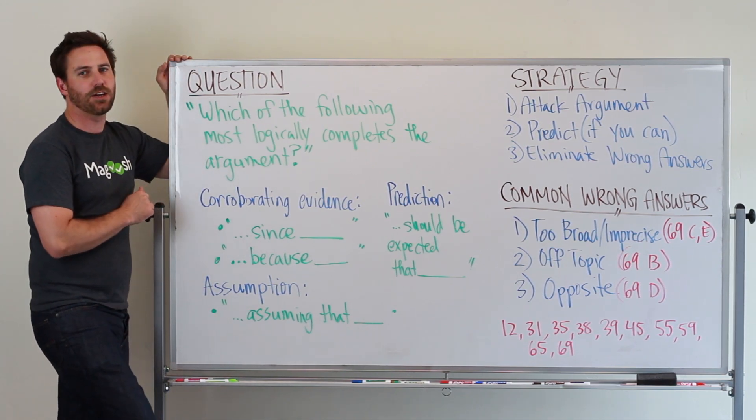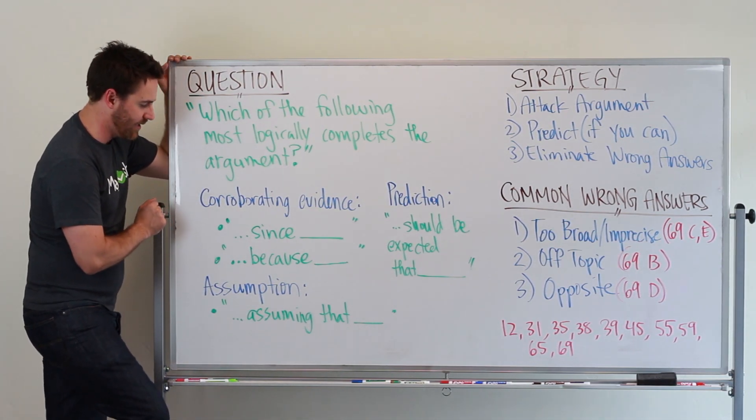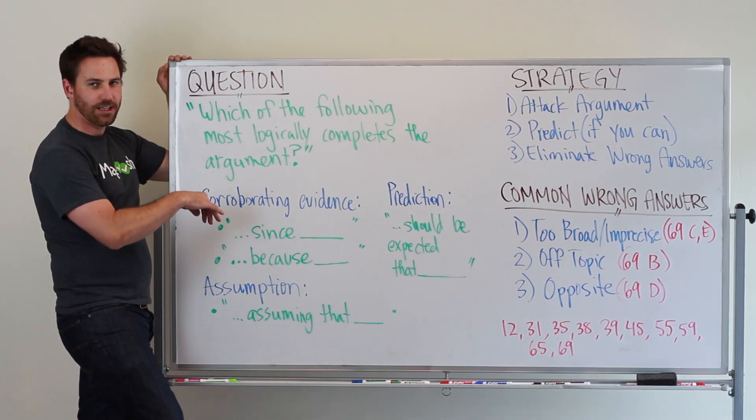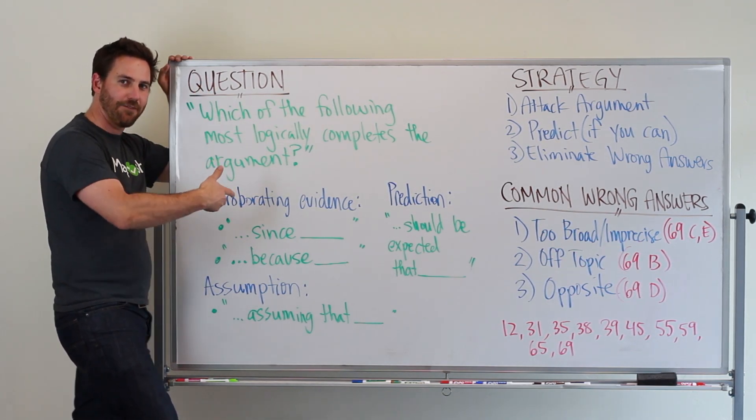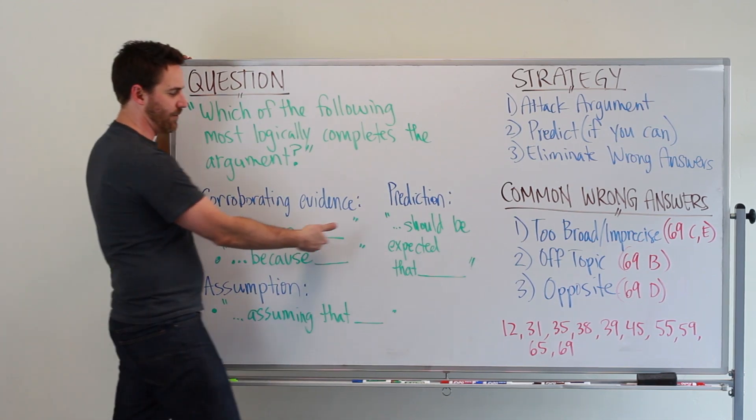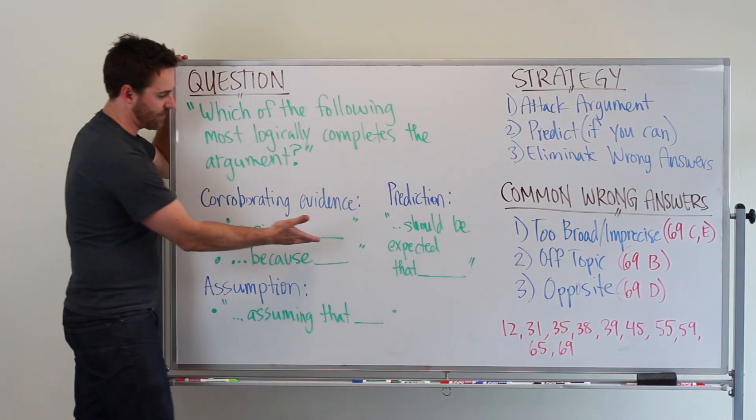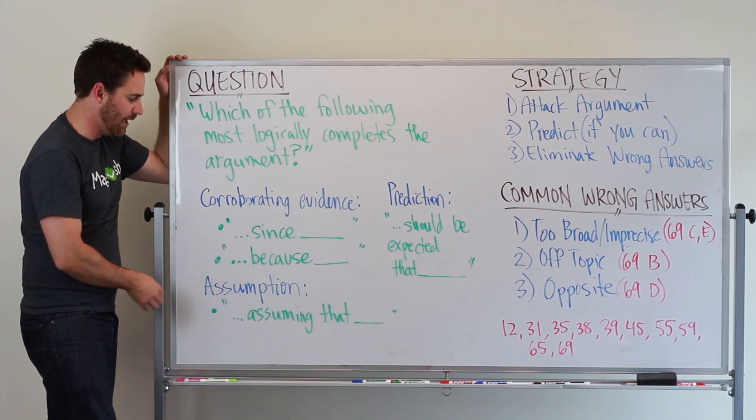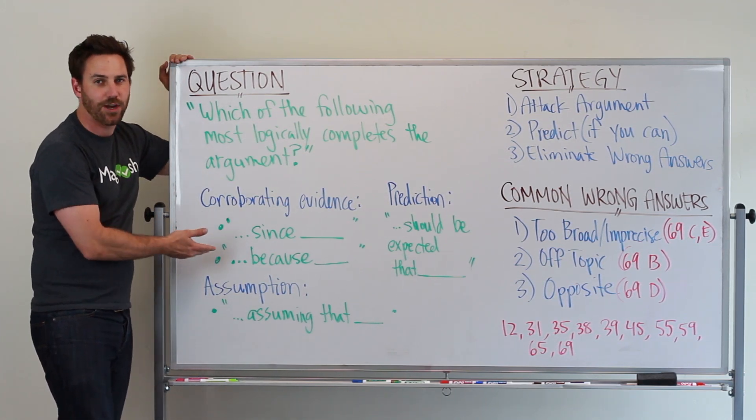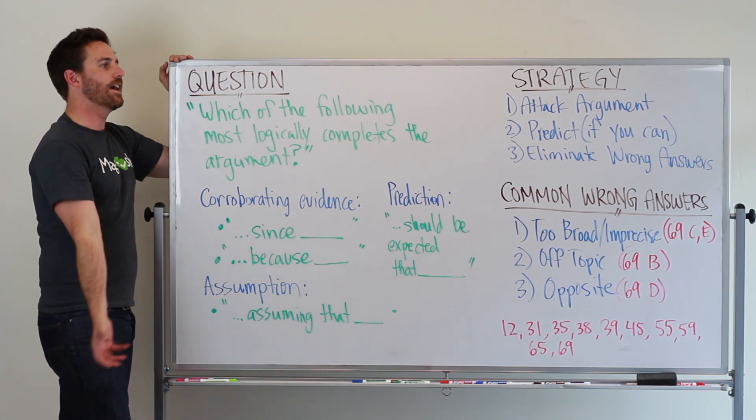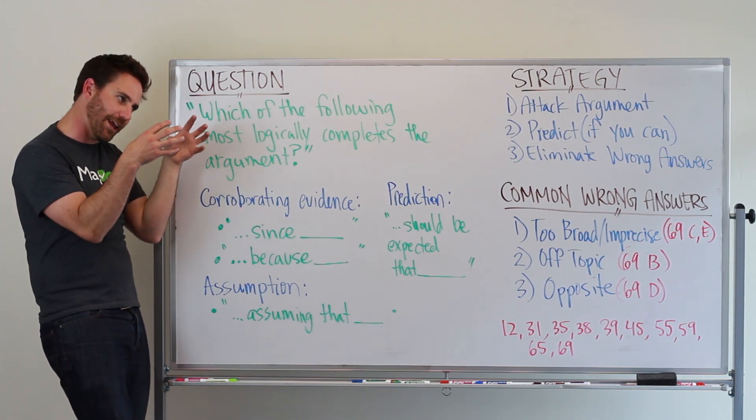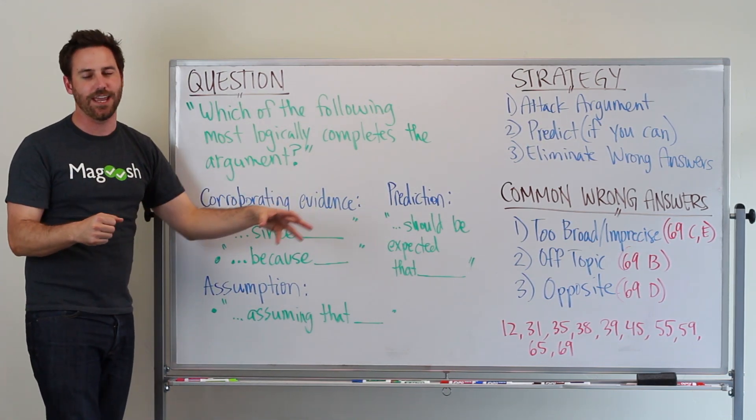There are three different types of ways that you're going to be asked to complete the argument. One is by finding corroborating evidence. In these situations, the paragraph or sentence will end halfway with a blank line, and it'll end with since or because. You're looking for a piece of evidence that's going to lend support to the argument, that's going to strengthen it and make it tighter than it already is.